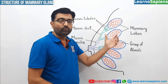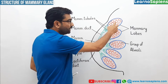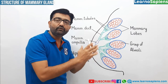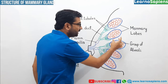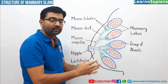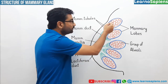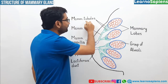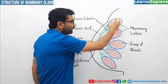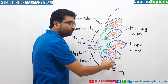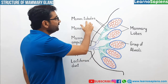Now inside each lobe, memory lobe is present. From these alveoli, memory tubes arise. Memory lobes — jitnay bhi alveoli benne huye hai, her eek lobe mein jitnay bhi alveoli hai, her eek alveoli se memory tubes nikalti hai.